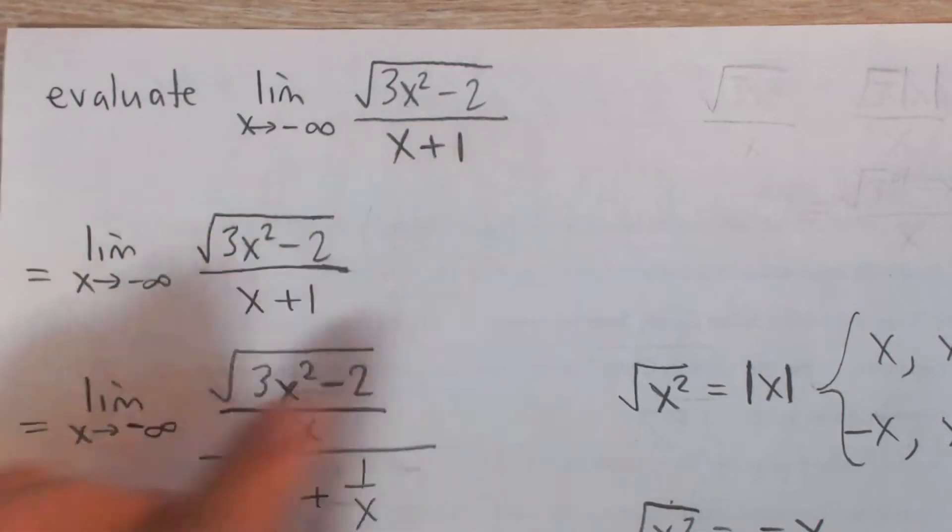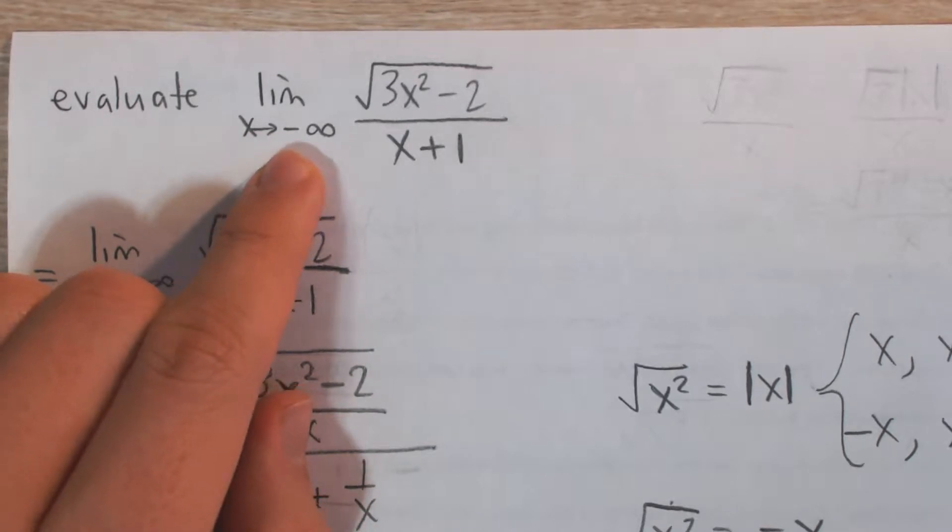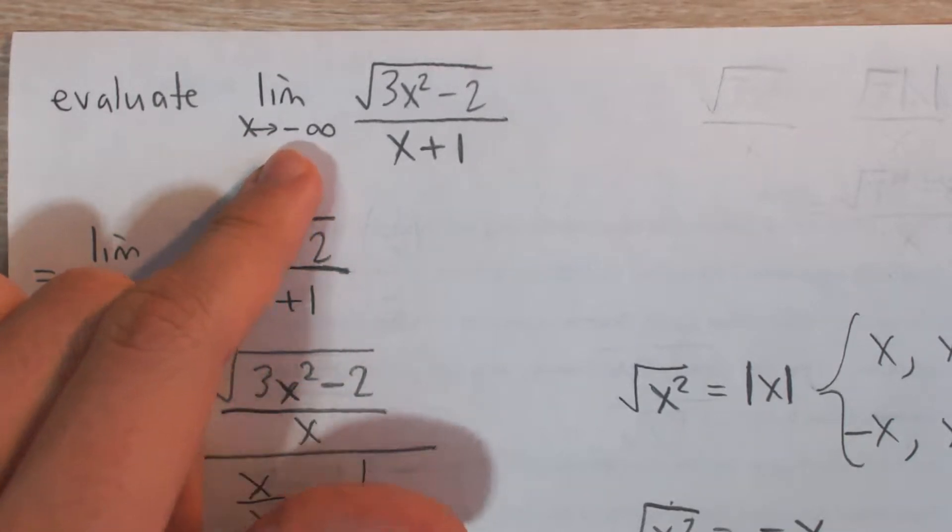So this is kind of a weird limit, right? We have a rational function and we have a square root and we're approaching negative infinity. So what would you think this answer could be?